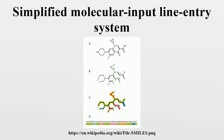Configuration around double bonds is specified using the / and \ characters. For example, F/C=C/F is one representation of trans-difluoroethene, in which the fluorine atoms are on opposite sides of the double bond, whereas F/C=C\F is one possible representation of cis-difluoroethene, in which the fluorines are on the same side of the double bond. Configuration at tetrahedral carbon is specified by @@ or @. L-alanine, the more common enantiomer of the amino acid alanine, can be written as N[C@@H](C)C(=O)O. The @@ specifier indicates that when viewed from nitrogen along the bond to the chiral center, the sequence of substituents hydrogen, methyl, and carboxylate appears clockwise. D-alanine can be written as N[C@H](C)C(=O)O.